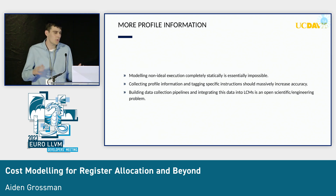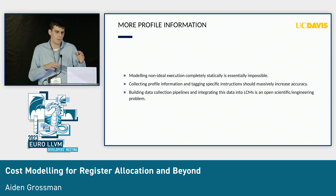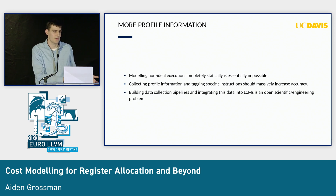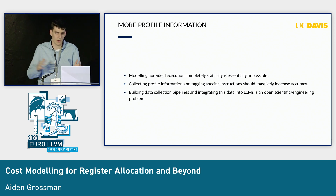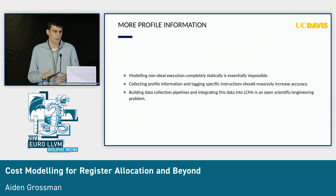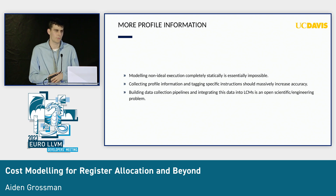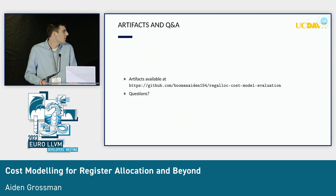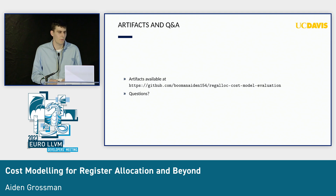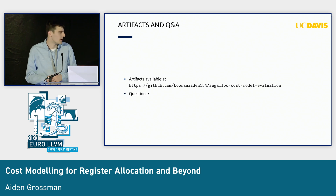We're also collecting profile information, because events like cache misses are a function not only of the code running but also the data the code is operating over. We're working on building pipelines to collect that information at runtime and feed it back into cost models. All the code I used for the evaluation and some of the benchmarks are available in my GitHub repository. Any questions?